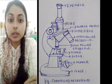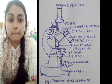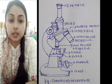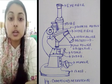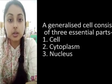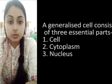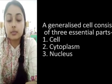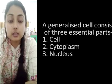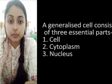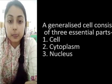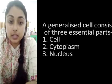Now let us look into the cell theory. The cell theory puts forward three major points: one, the cell is the structural unit of life; two, it is the functional unit; and three, cells arise from pre-existing cells.